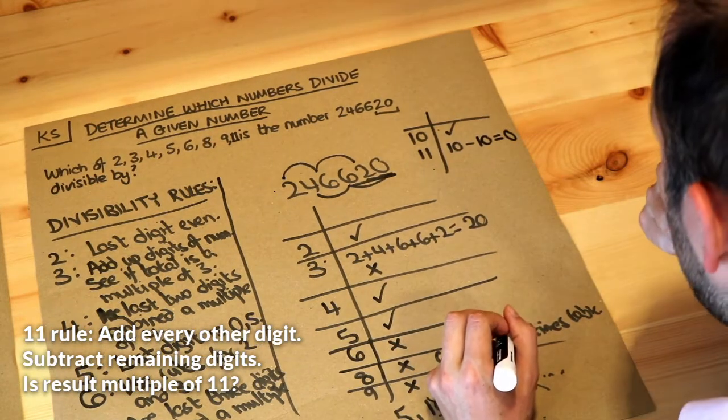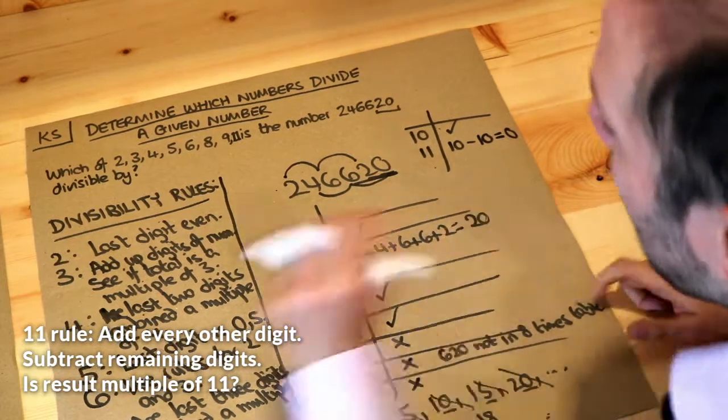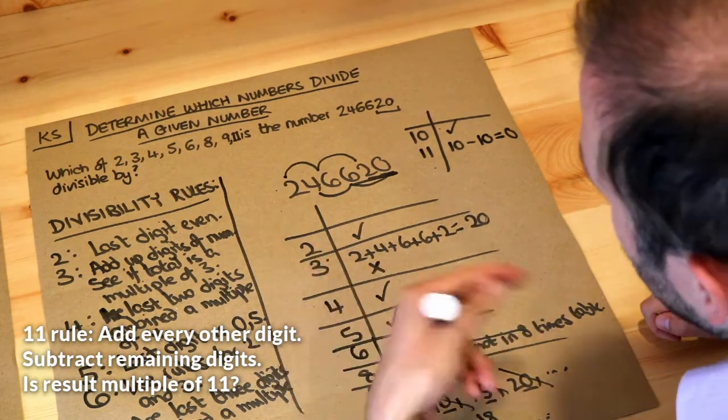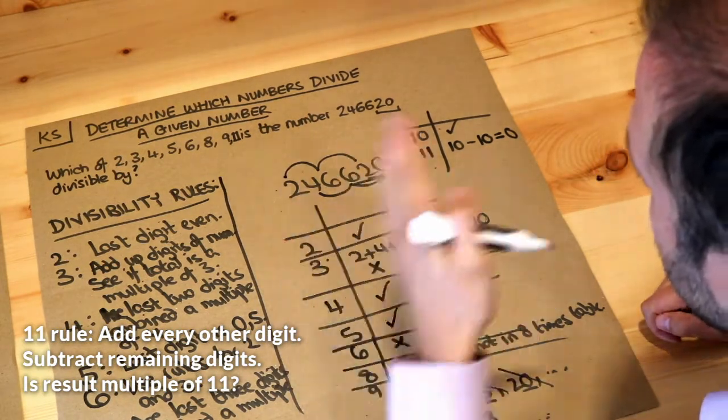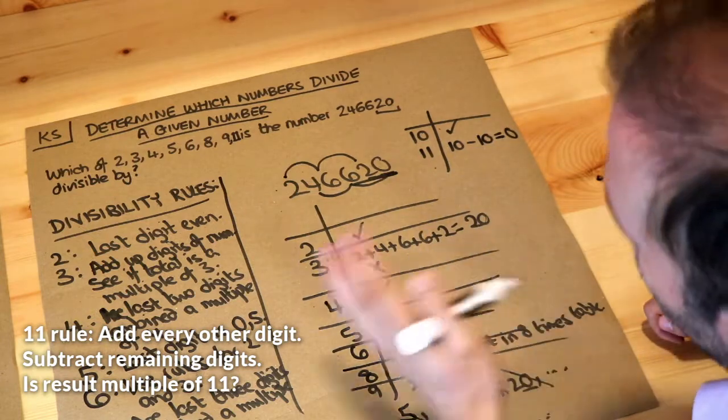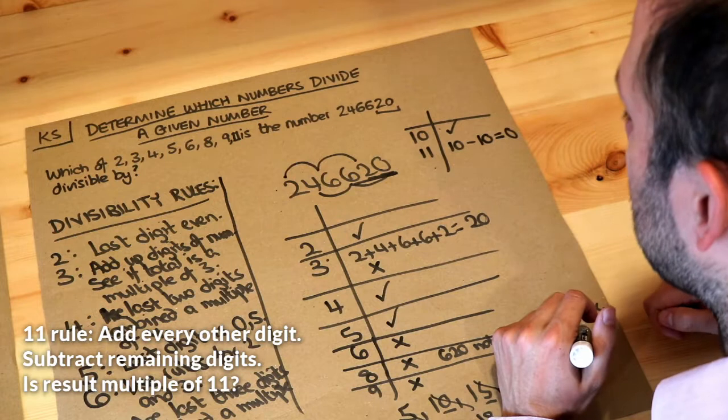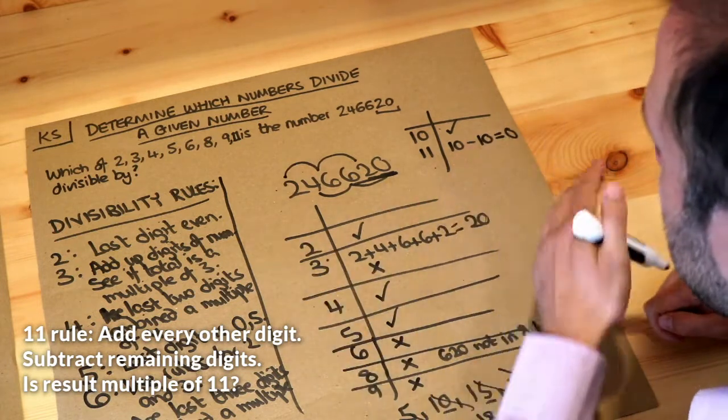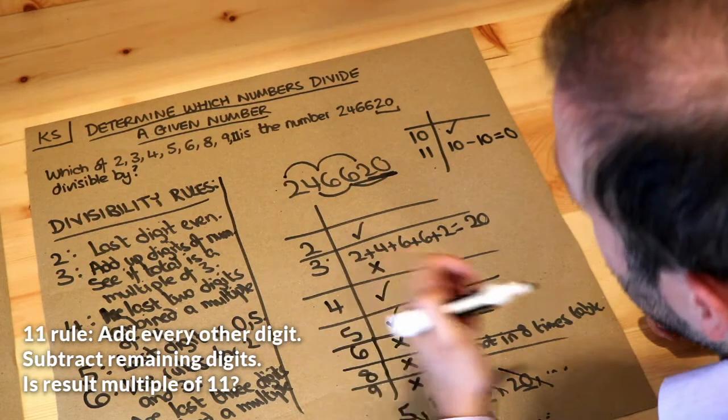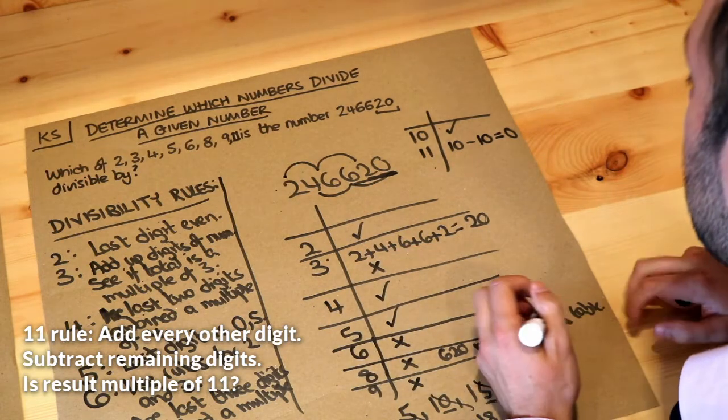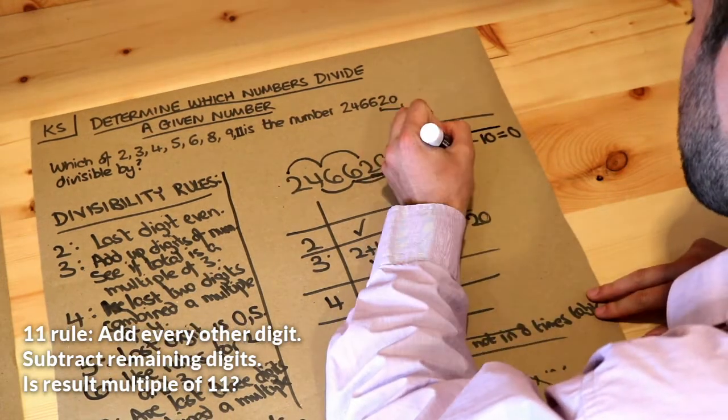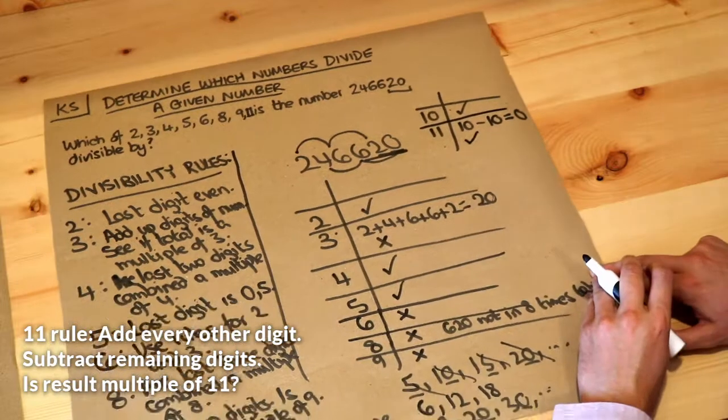Now is 0 in the 11 times table? Now we consider 0 to be in every times table because a number is in the 11 times table if you can do 11 times something to get that. So if you do like 11 times 3 that gives you 33. That's in the 11 times table. Now if you do 11 times 0 that's 0. So 0 is technically in the 11 times table. So therefore our number is divisible by 11.